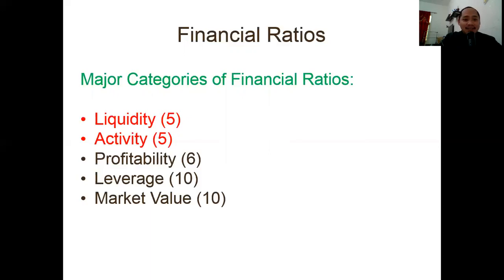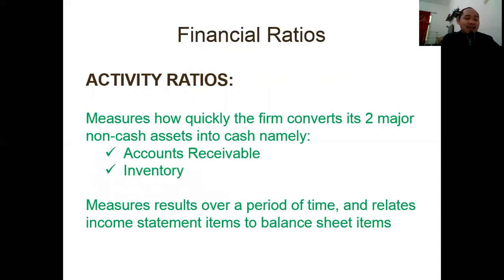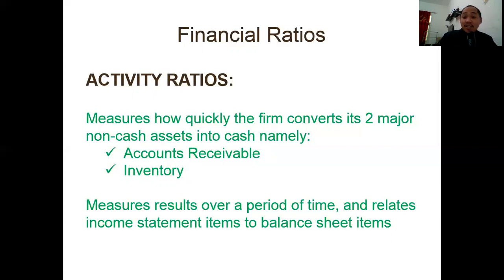What is the activity ratio? Activity ratio measures how quickly the firm converts two of its major non-cash assets — specifically accounts receivable and inventory. This is tied to the liquidity ratio because the better you manage liquidity, the better. The income statement items used here are always the net figures: accounts receivable relates to net sales, and inventory relates to cost of sales. There is a relationship between income statement and balance sheet items.